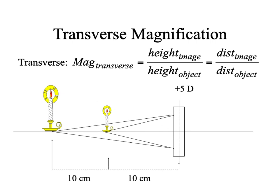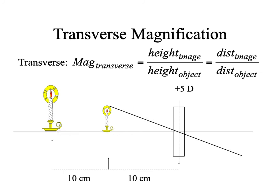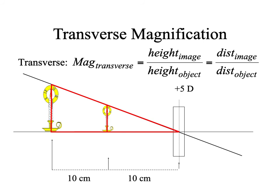In the case where the object is the smaller candle and the image is the larger candle further to the left, we now have a plus-5 lens. We do central ray tracing again from the object through the center of the lens. We extrapolate it backwards and have our triangles, and the magnification is two times because the distance to the image is twice the distance to the object.